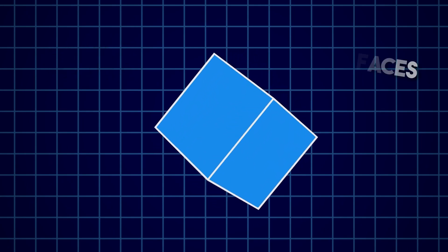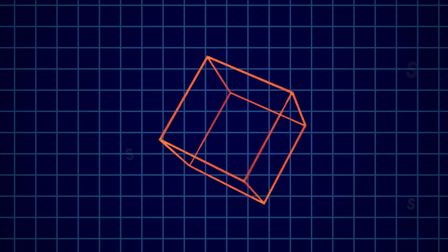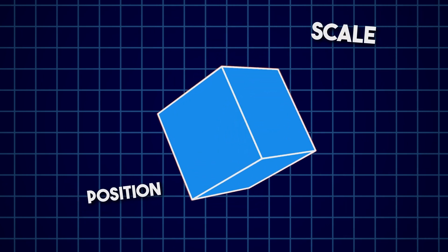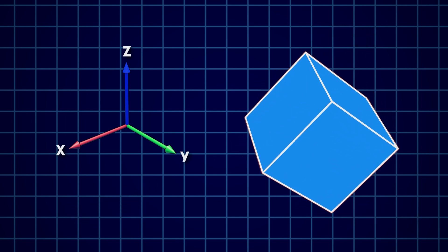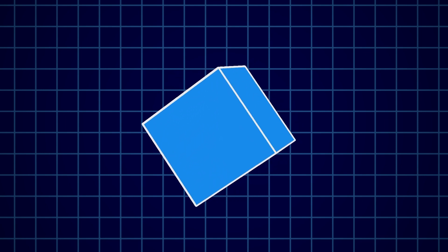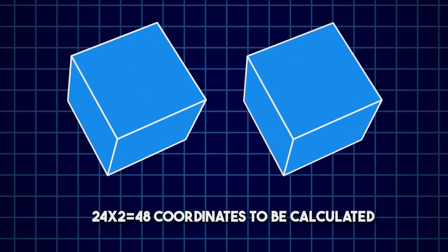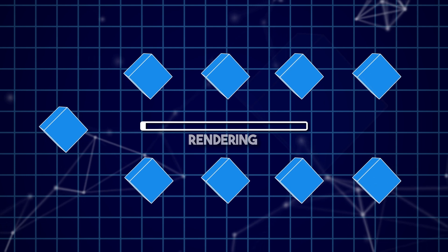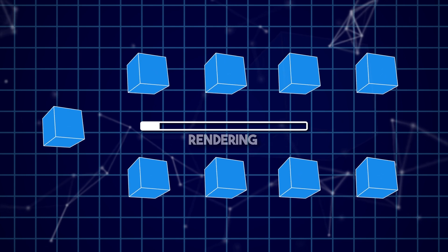A simple cube consists of 6 faces, meaning 6 polygons, and is made of 8 individual vertices. The computer has to calculate the world position, scale, and rotation of each separate vertex — that's 8 multiplied by 3, meaning 24 coordinates to be calculated. Duplicate that cube and you have 48 coordinates. Make 1,000 of those and the computer will have to process a whole load of coordinates, logically taking longer to render.